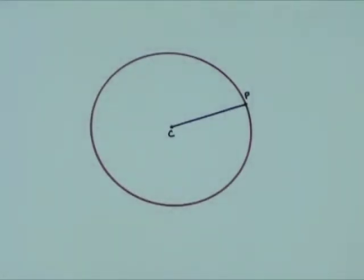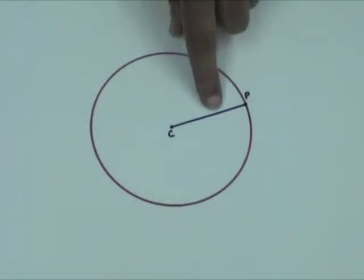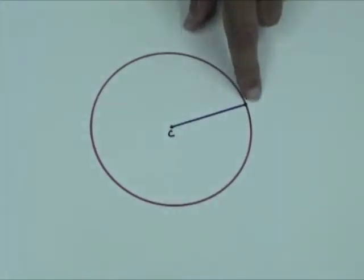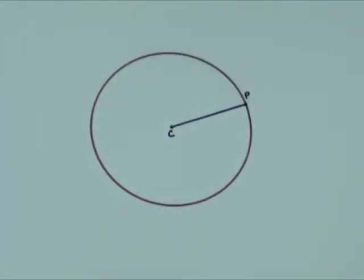A tangent line to the circle at point P has the property that it is perpendicular to radius CP at P. So we can construct the tangent line at P by constructing a perpendicular to CP at P.